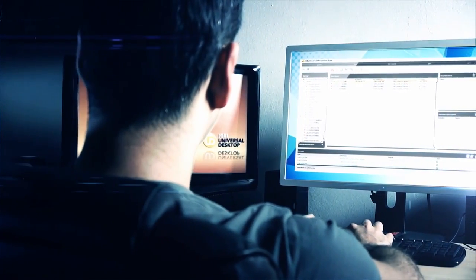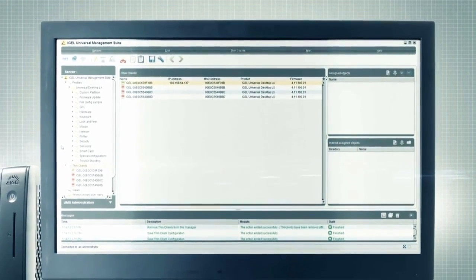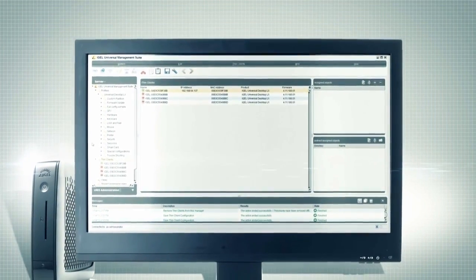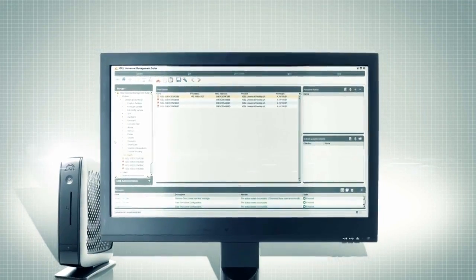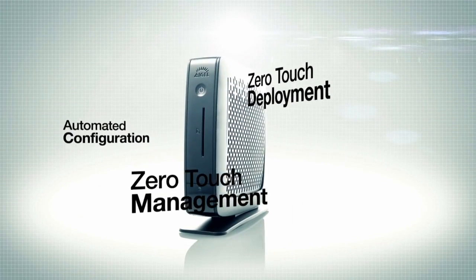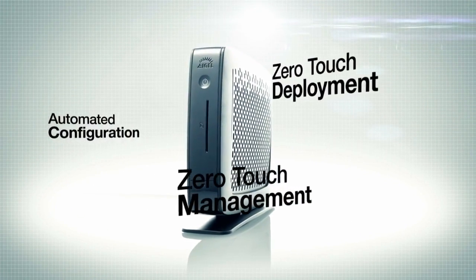But it is not only the hardware that is important. iJill software is equally convincing. iJill Universal Management Suite software is easy to use yet extremely powerful. Installation and management is simply carried out using drag and drop and point and click.